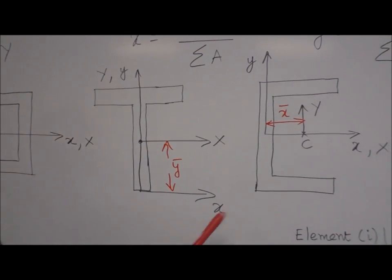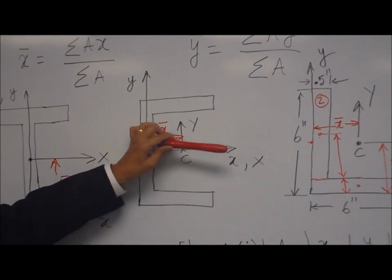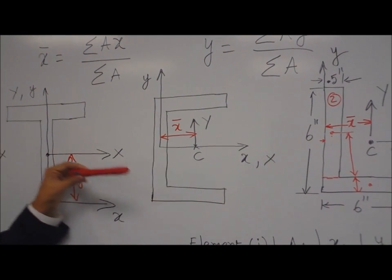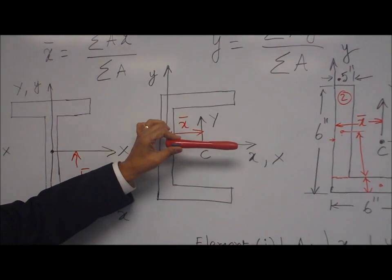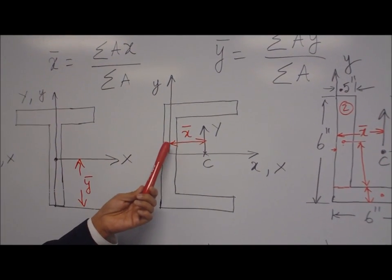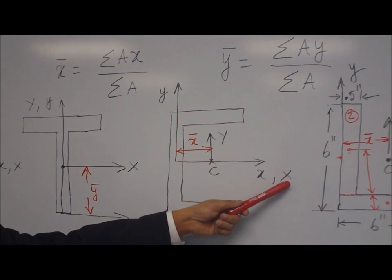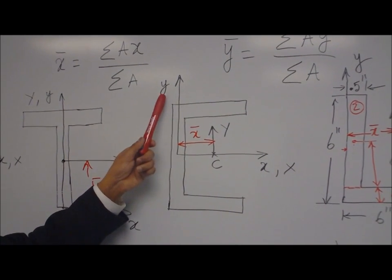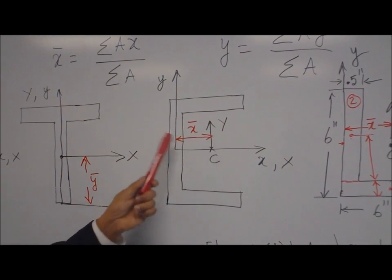Now let's take a C-section. In this section, we have horizontal symmetry but there is no vertical symmetry. So the centroid should lie on the horizontal symmetry axis, and where on that axis is given by the distance x̄. In this case, capital X and small x coincide, whereas small y and capital Y are different.